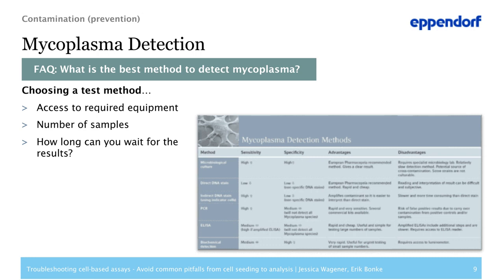Our first FAQ: What is the best method to detect mycoplasma? You see an overview of the different methods, and as you can see, all of them have advantages and disadvantages. When choosing a method for your lab, several aspects should be considered: Do you have access to the desired equipment? How many samples do you need to test at once? And how long can you wait for getting the results?